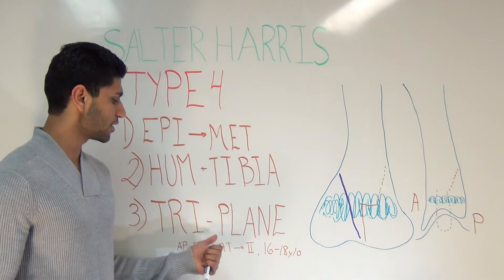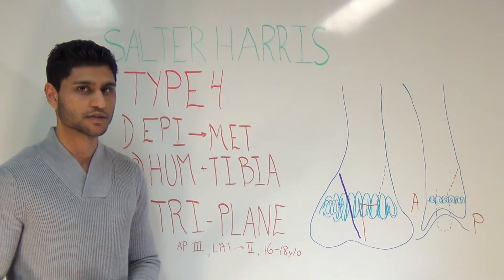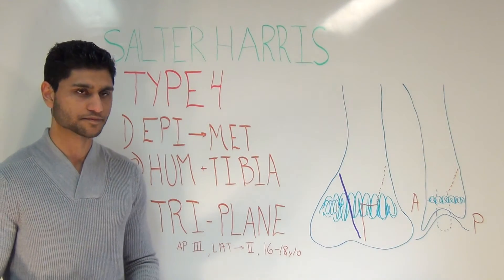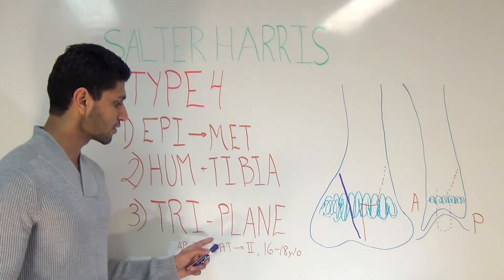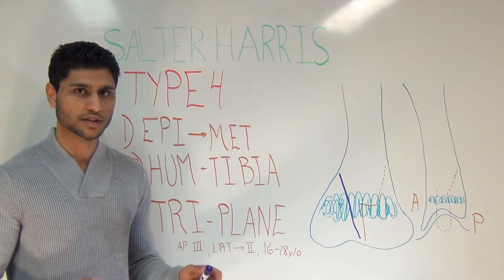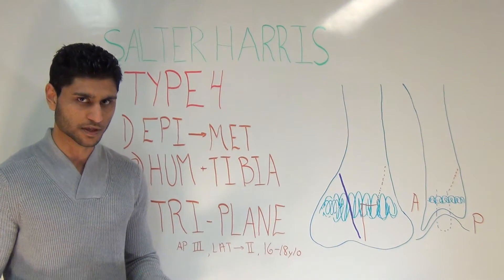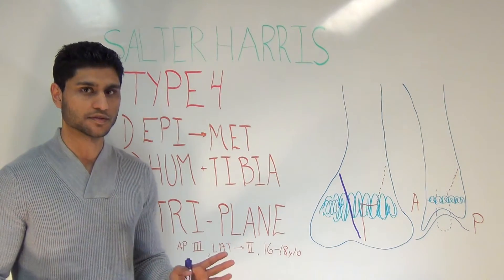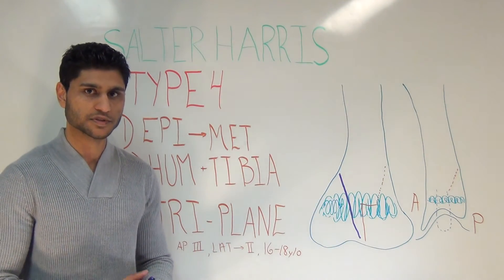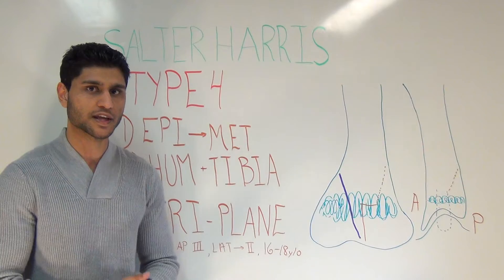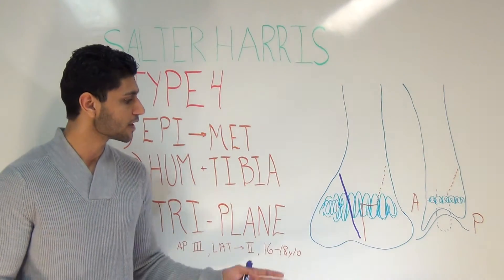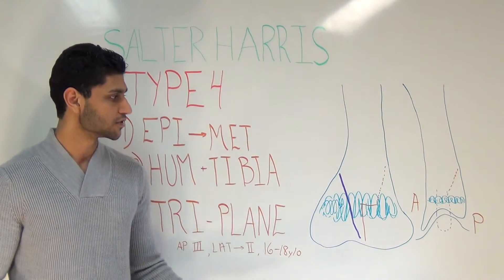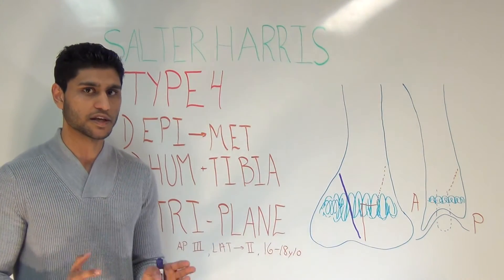A very interesting variation of a type 4 is something called a triplane fracture, and these occur in the tibia. In order to understand a triplane fracture, let's review some anatomy. Normally, in the distal tibia, the epiphyseal plate closes over an 18-month transitional period, occurring between the ages of 16 and 18. So these fractures are unique to that age group.